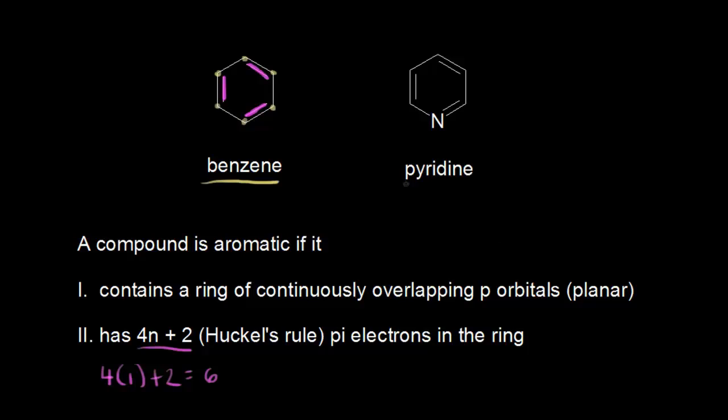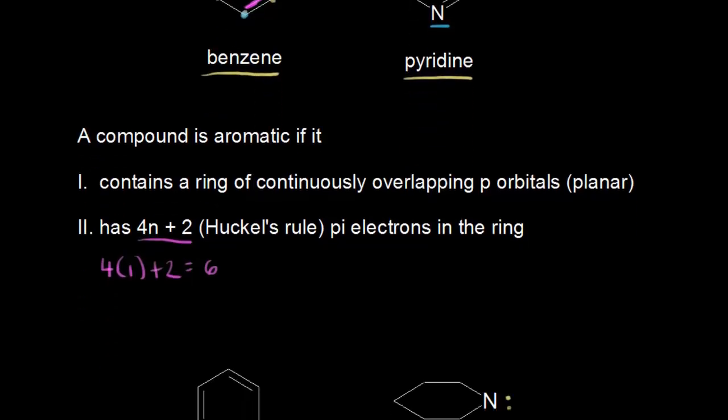If we look at the pyridine molecule, pyridine is an analog to benzene. The only difference is that pyridine has a nitrogen in the ring instead of one of the carbons. So we say that pyridine is a heterocycle — a cyclic compound that contains a heteroatom in the ring. A heteroatom is any atom other than carbon, such as nitrogen, oxygen, or sulfur. Heterocycles can be aromatic too, so let's analyze pyridine in more detail.